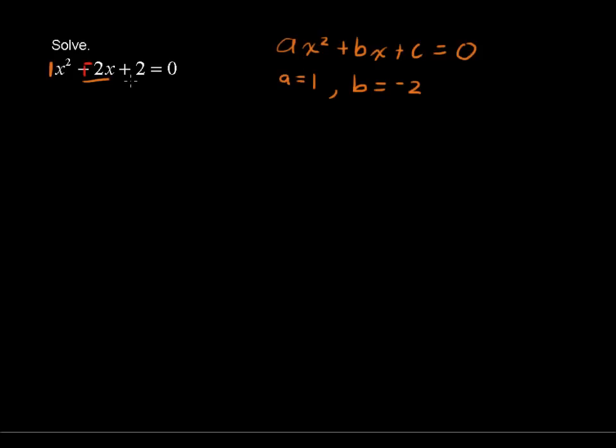c is our constant term, that is 2, c equals 2. So we have our a, b, and c, and the reason we want to pick those off is for the quadratic formula.